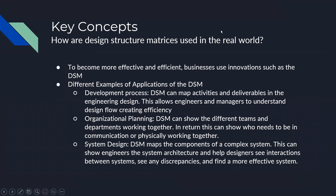How are Design Structure Matrices used in the real world? To become more effective and efficient, businesses use innovations such as DSM. Different examples of application include development process, organizational planning, and system design. For development process, DSM can map activities and deliverables in engineering design, allowing engineers and managers to understand design flow and create efficiency. For organizational planning, DSM can show different teams and departments working together, indicating who needs to communicate or physically work together. For system design, DSM maps the components of a complex system, showing engineers the system architecture and helping designers see interactions, discrepancies, and more effective systems.